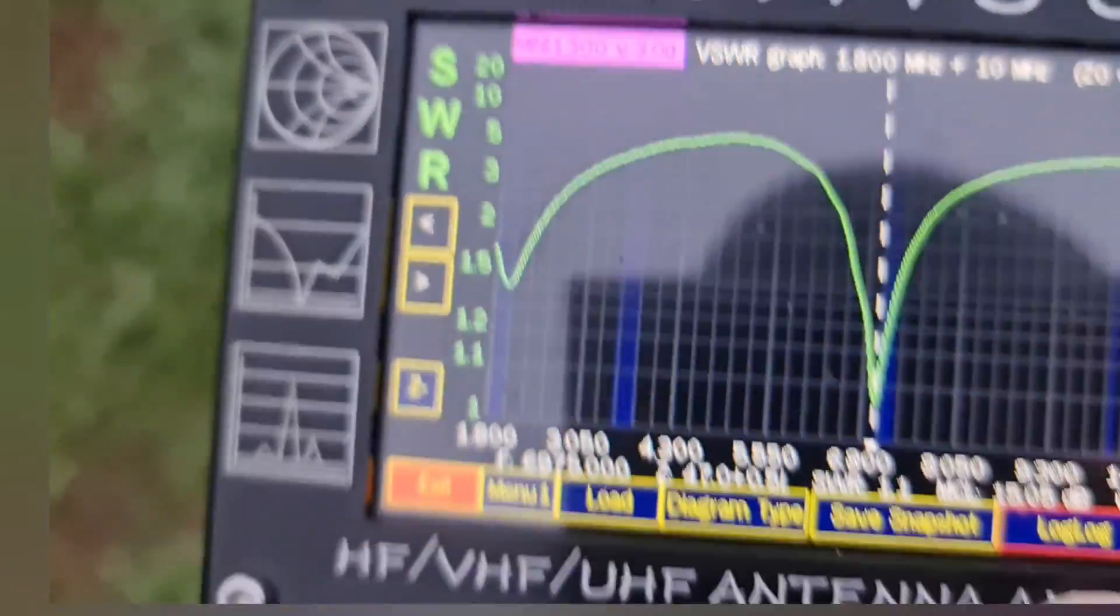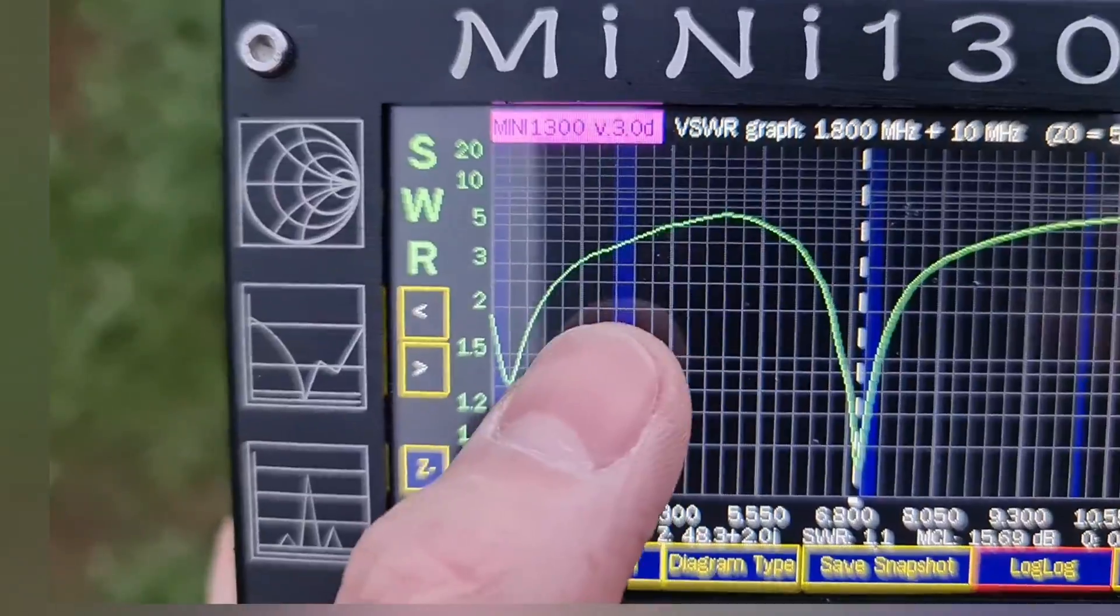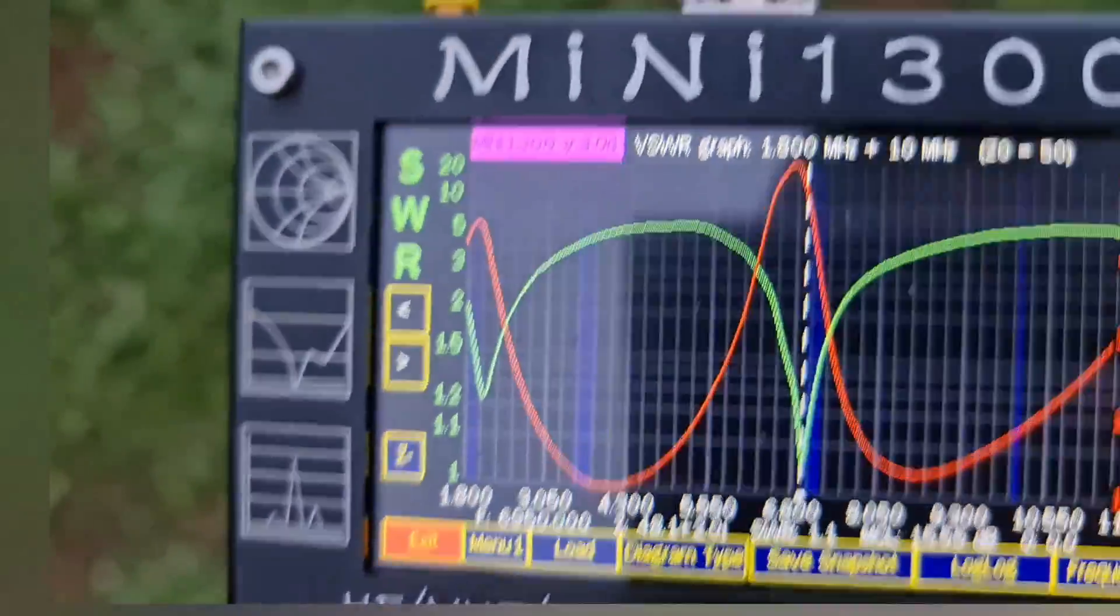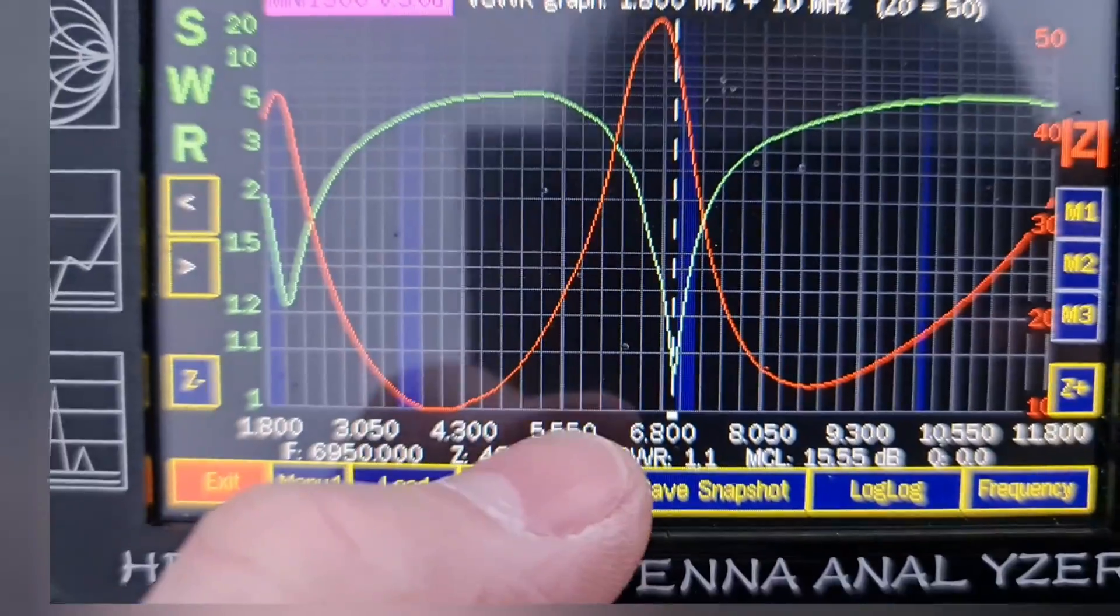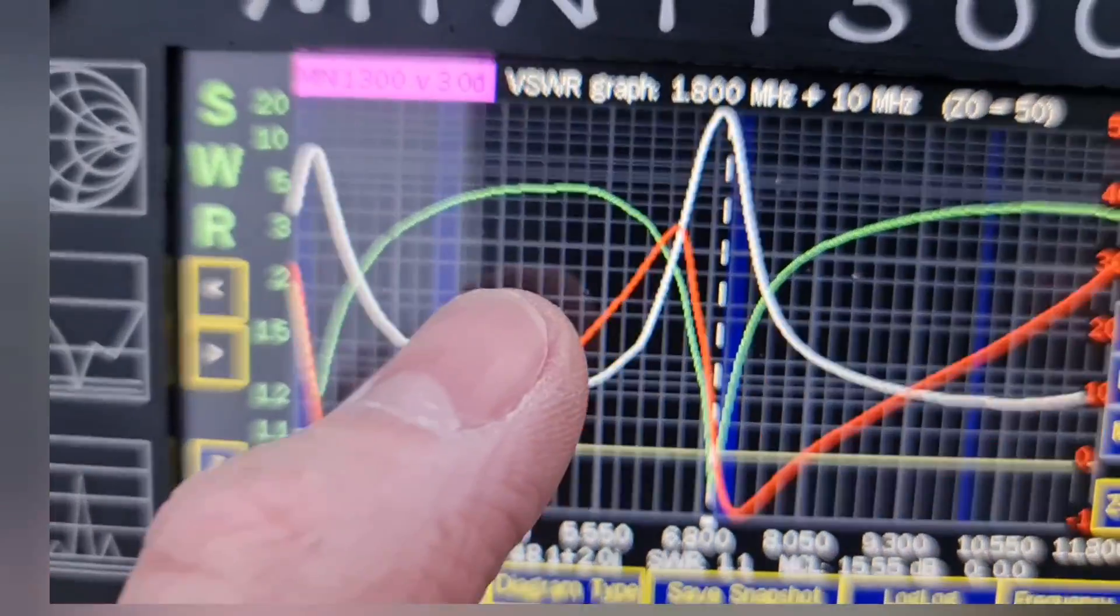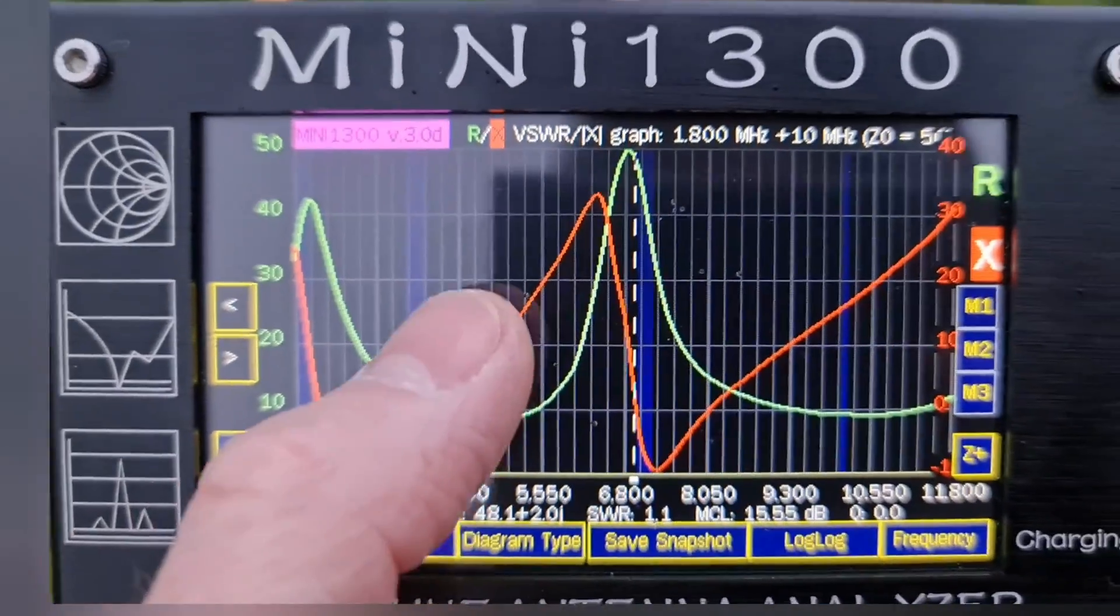There we have 3.5 megahertz, it is very high, it's right here. And 7 megahertz, so you can see the other parameters of this antenna.